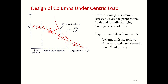A curve is fitted through the scattered data by statistical means. We can identify three regions: short column, intermediate column, and long column. For long columns, the experimental curve approaches the Euler curve, and the Euler curve can be used directly. For practical design, empirical relations are applied. The Euler curve is a theoretical relation, and empirical relations are derived from the experimental data.